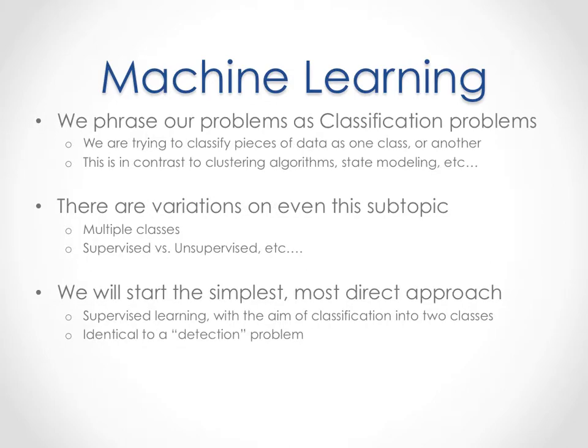We're going to phrase all of our problems as classification problems — that's where you have a chunk of data and you want to label it as category A, category B, or category C. For instance, if you want to do a face detection problem, category A means there is a face in this block of pixels, category B means there is not. To find faces in a picture, you divide the picture up into as many little chunks of pixels as you want and classify each chunk independently.